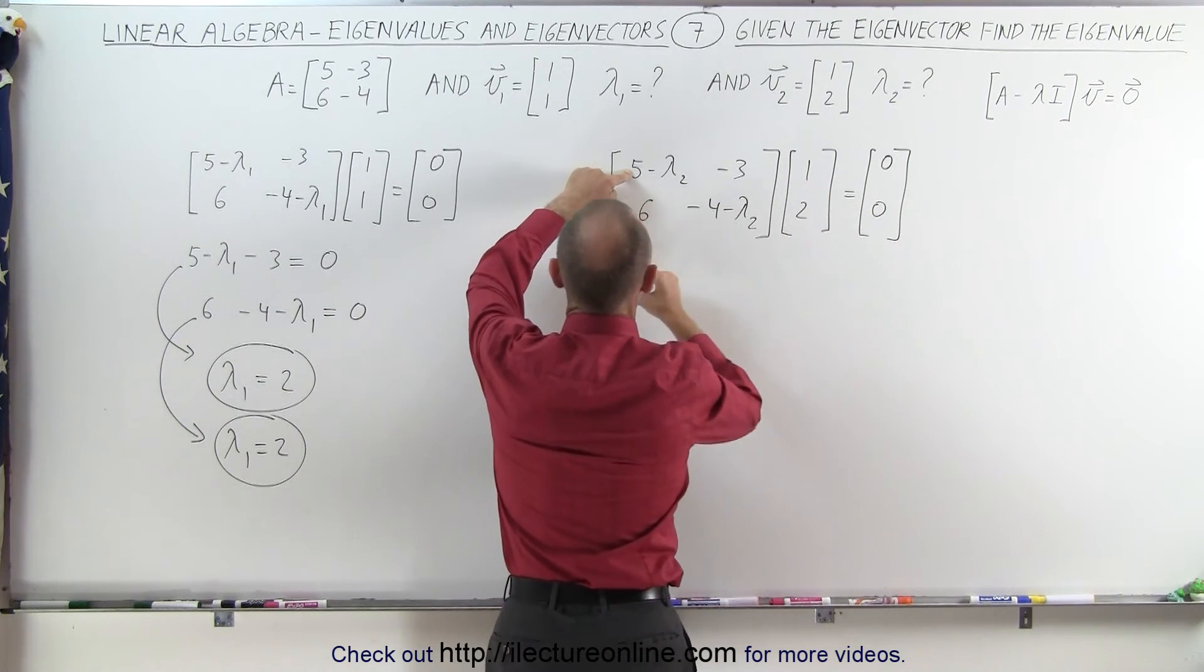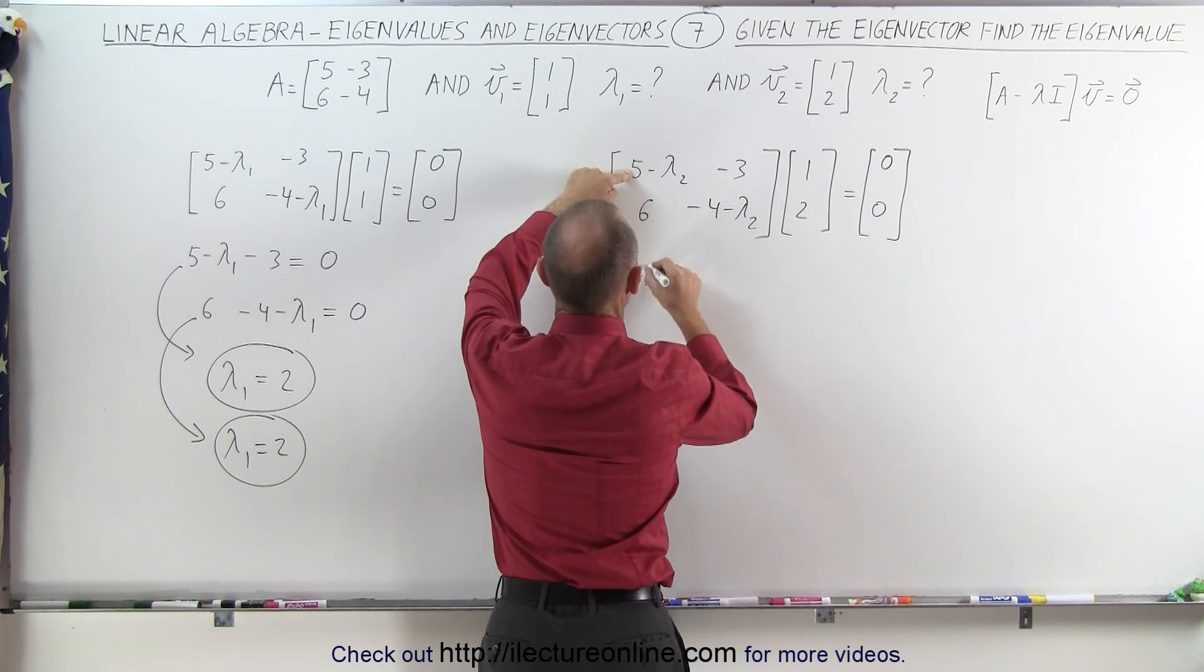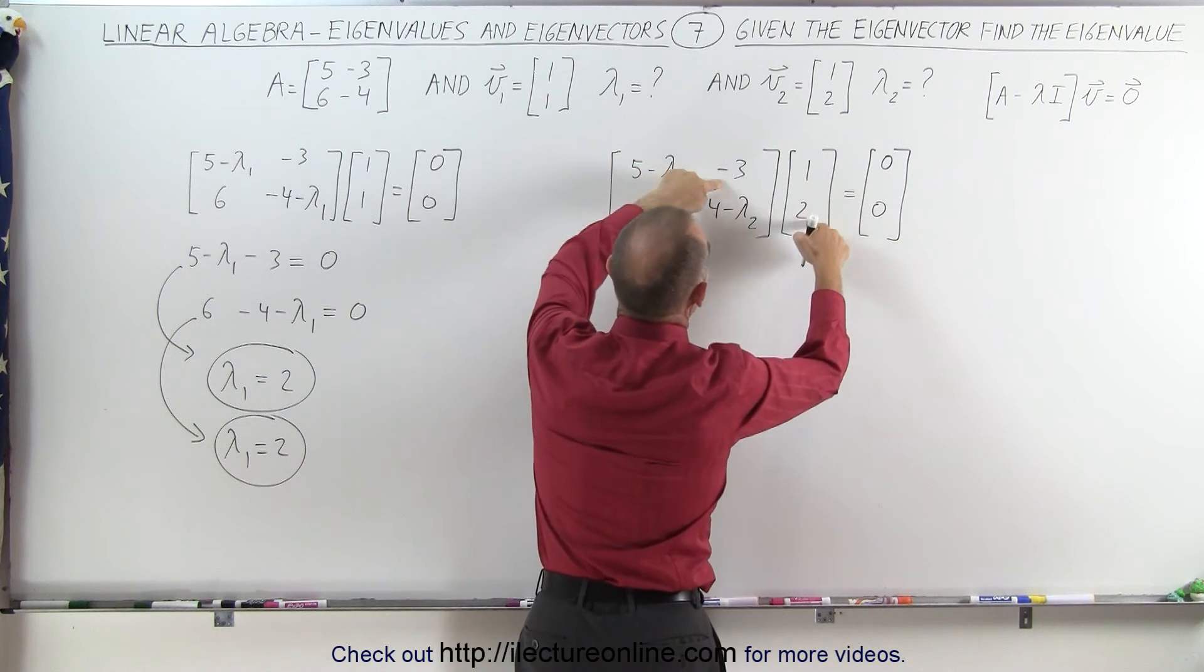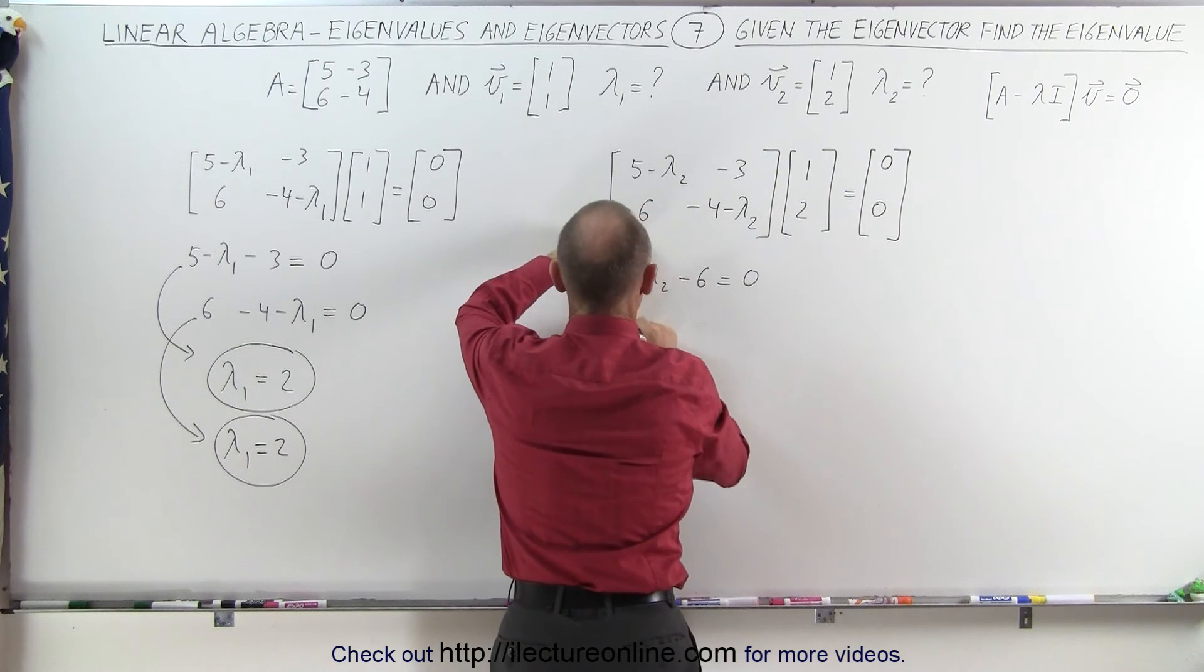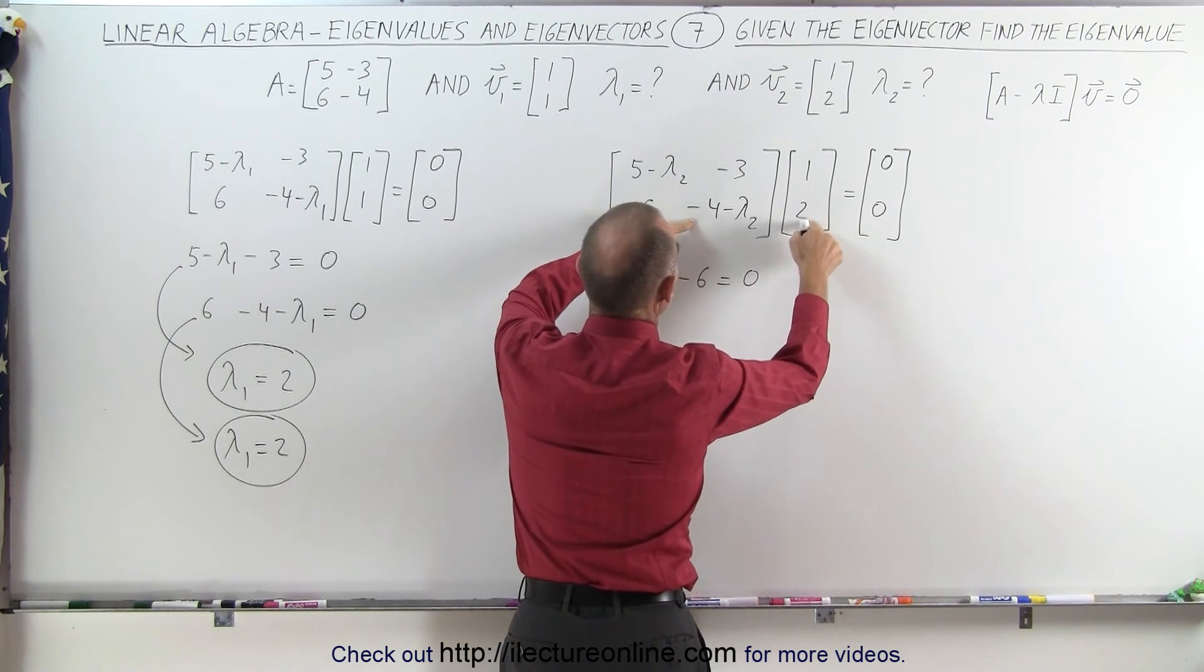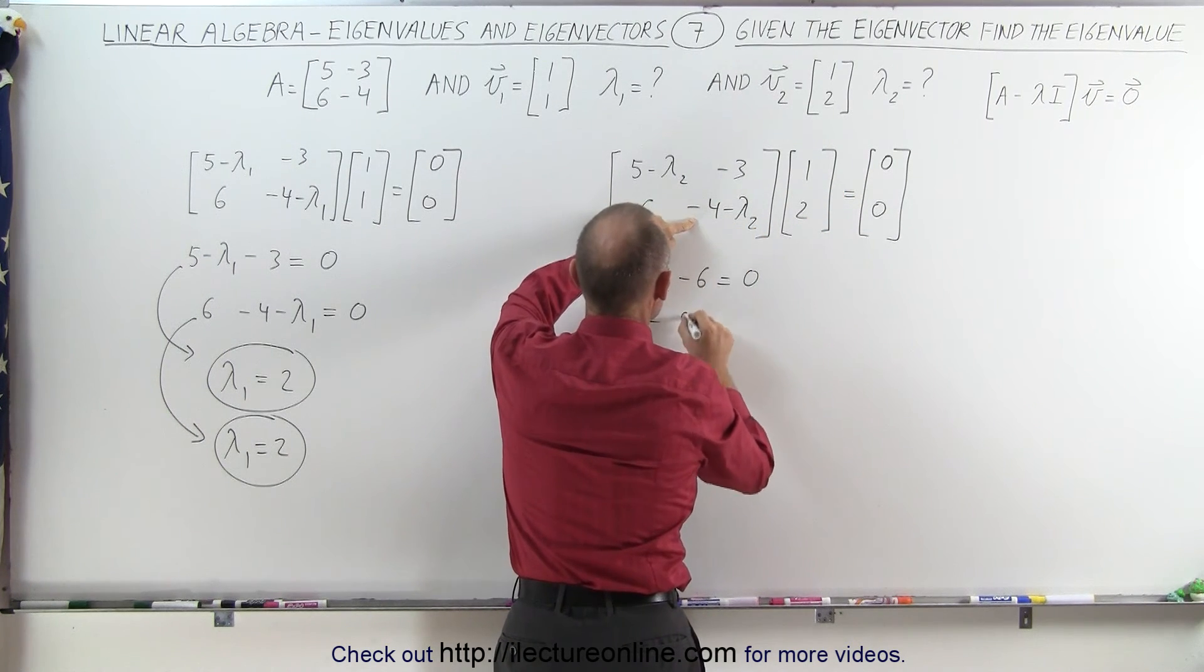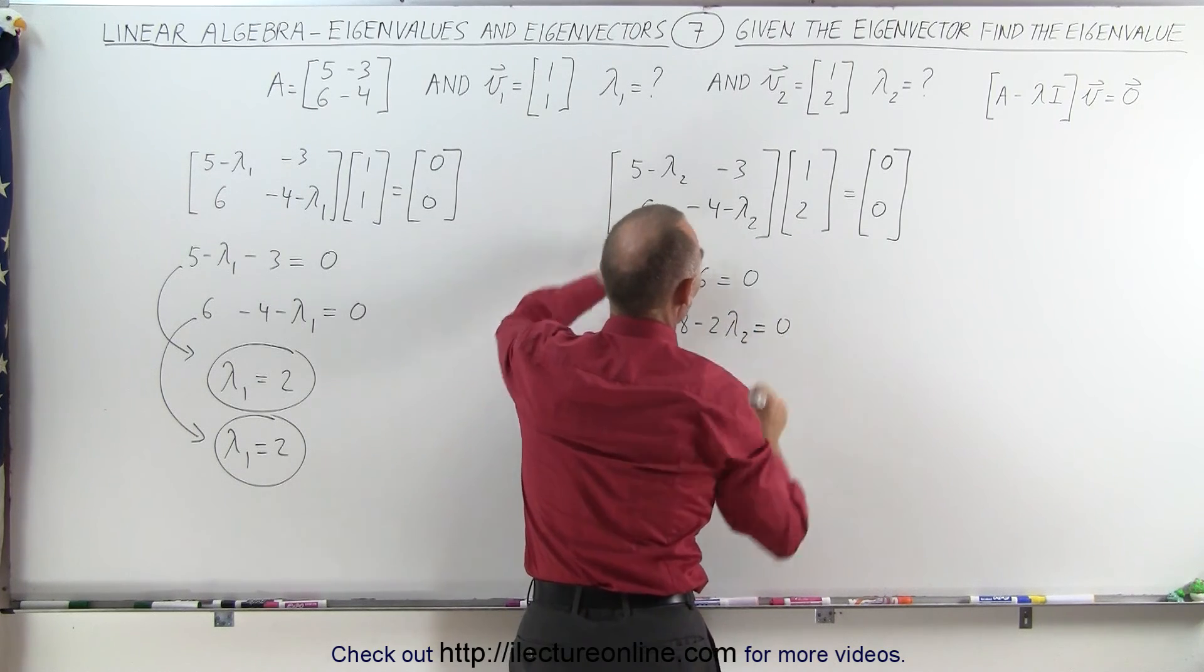Again we multiply this times this, so we get 5 minus λ₂ minus 6 equals 0. And multiplying this times this gives us minus 8 minus 2λ₂ equals 0.